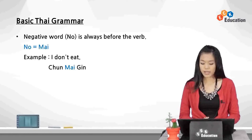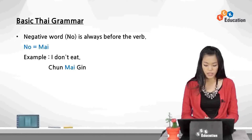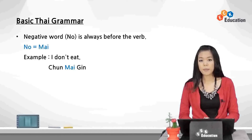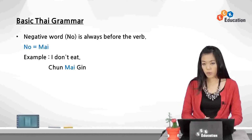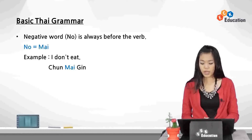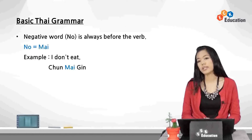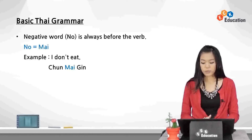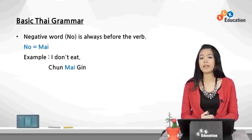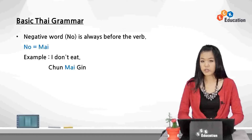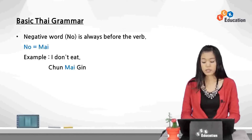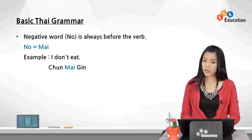For example, 'I don't eat' — chan may gin. Chan means 'I,' gin means 'to eat,' and the negative word mai, which means 'no,' is put before the verb. So mai gin means 'do not eat.' Since Thai is a tonal language, please be careful how you pronounce words. When you say mai, keep in mind that the word is short and stressed. Let's try together — mai, mai — because this word is pronounced similarly to other words, so you have to be careful.